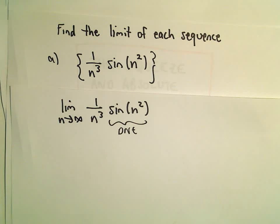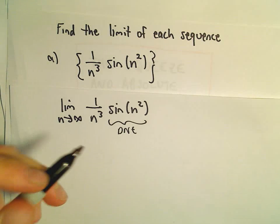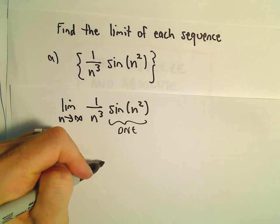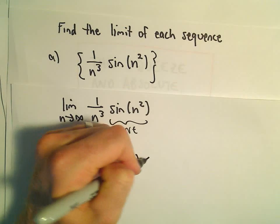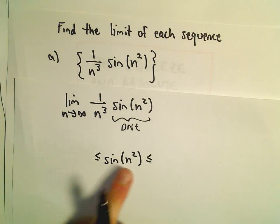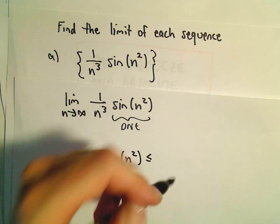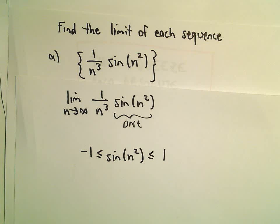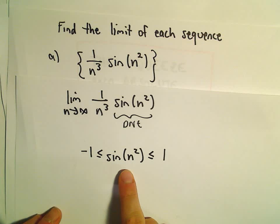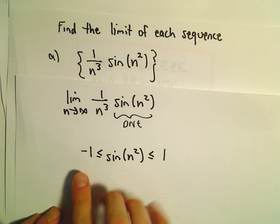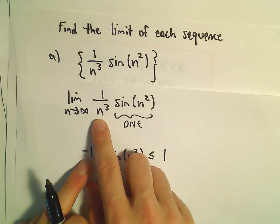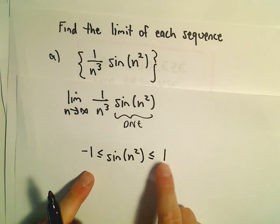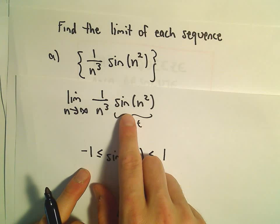But that doesn't mean that we can simply say this limit doesn't exist. What we can use in this case is the squeeze theorem. So sine of n squared, sine of anything is always between positive 1 and negative 1. We're going to try to find a function that's smaller than 1 over n cubed sine of n squared, and a function that's bigger than 1 over n cubed sine of n squared.